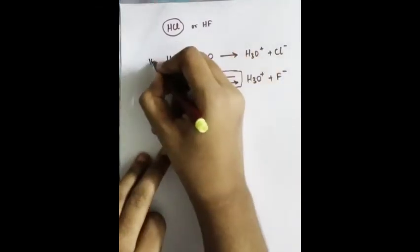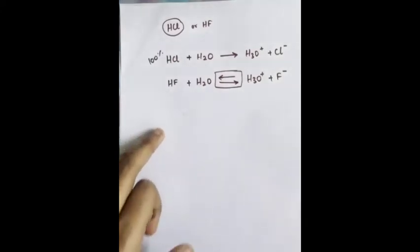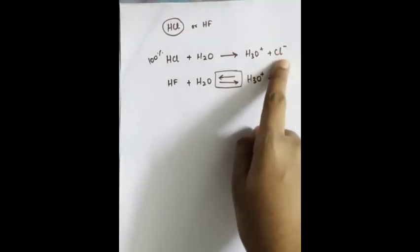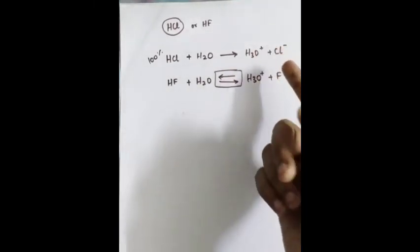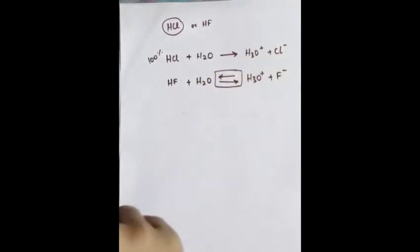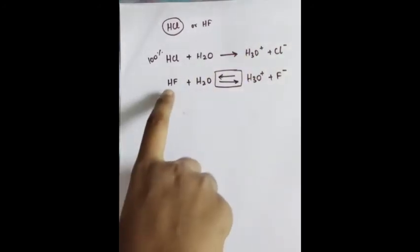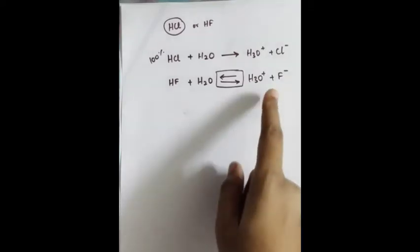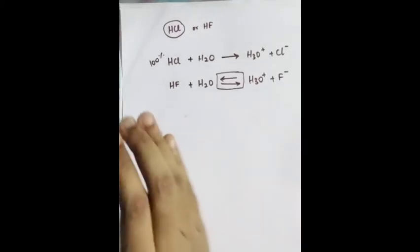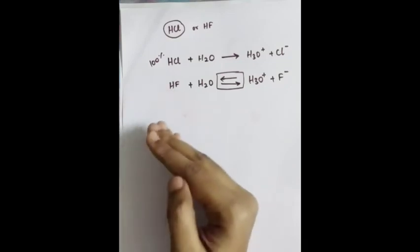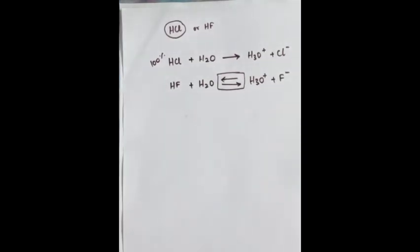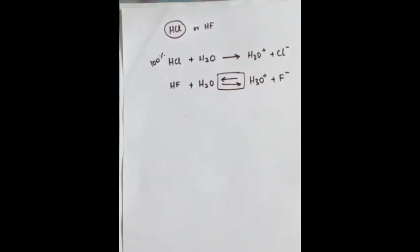A strong acid is 100% dissociated. If you add 1 mol of HCl, at the end of the reaction you will get 1 mol of chloride ion as well as 1 mol of hydronium ions. But if you dissolve 1 mol of hydrofluoric acid, an equilibrium exists — the entire 1 mol will not dissociate into F⁻. That's why it's a weak acid.